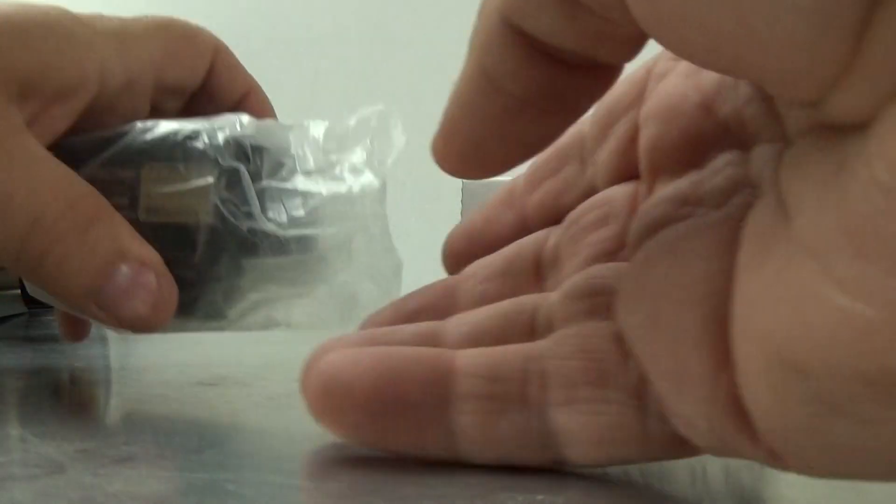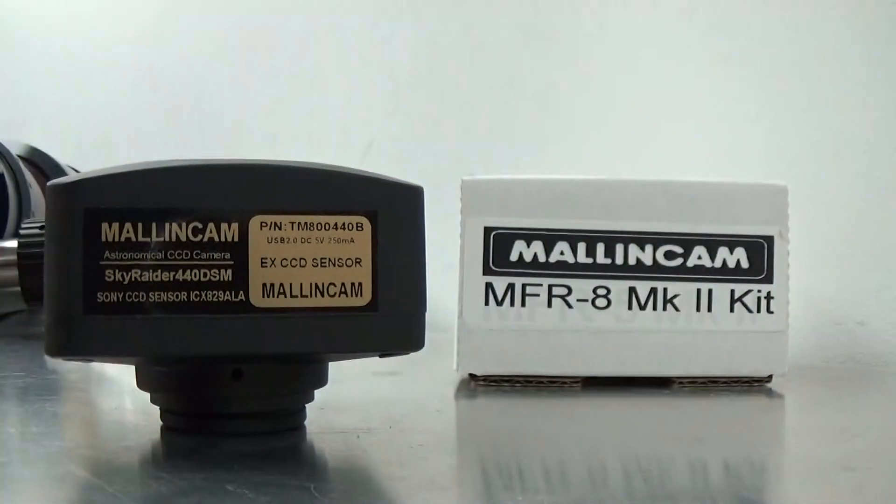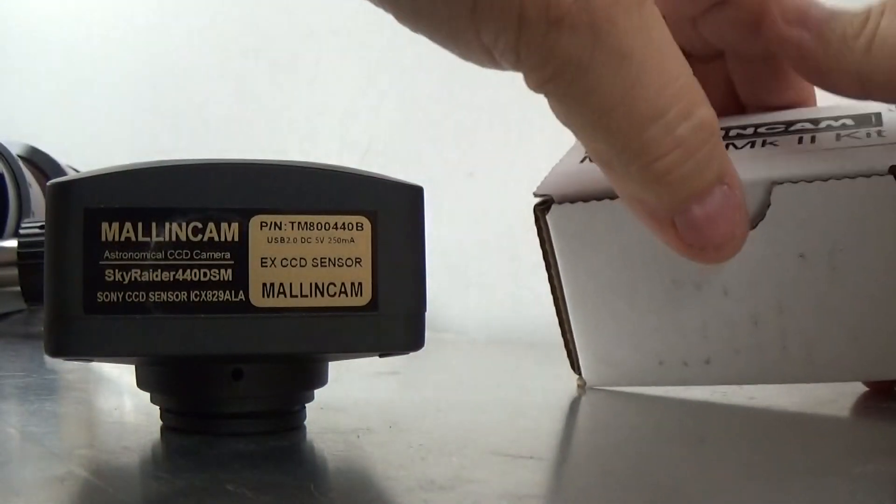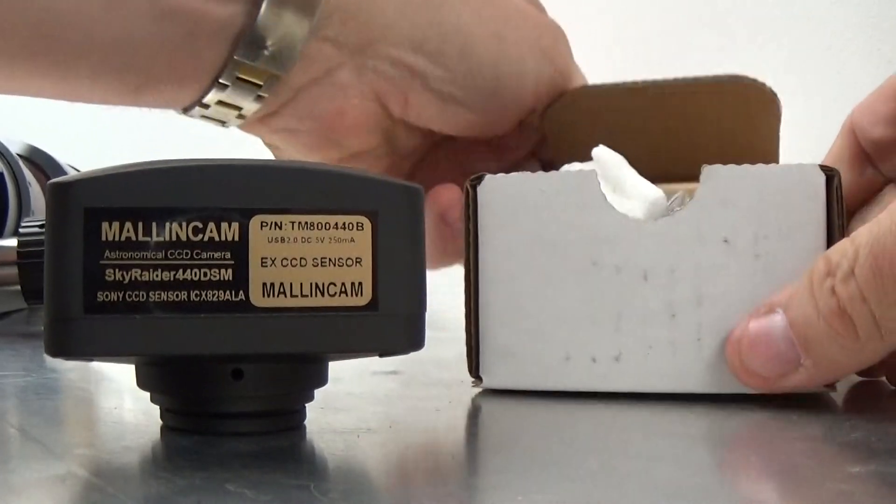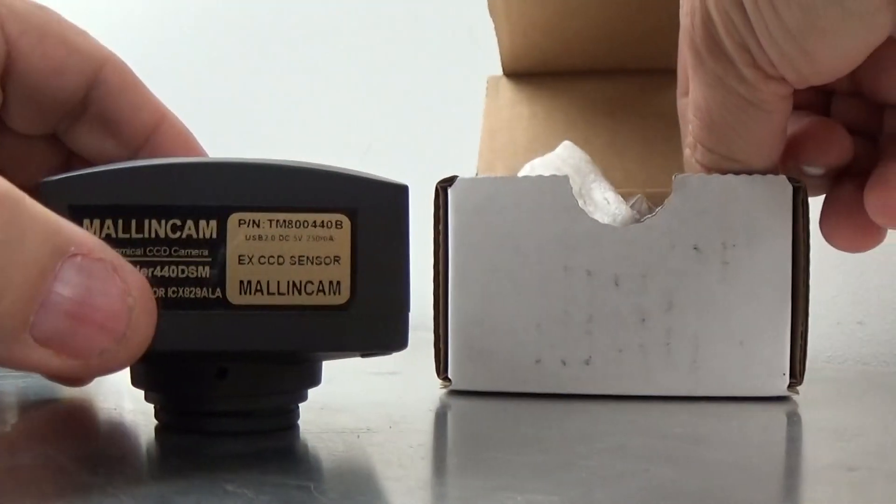First of all, you need to unpack your Skyraider camera and open up the box where the focal reducer came with.